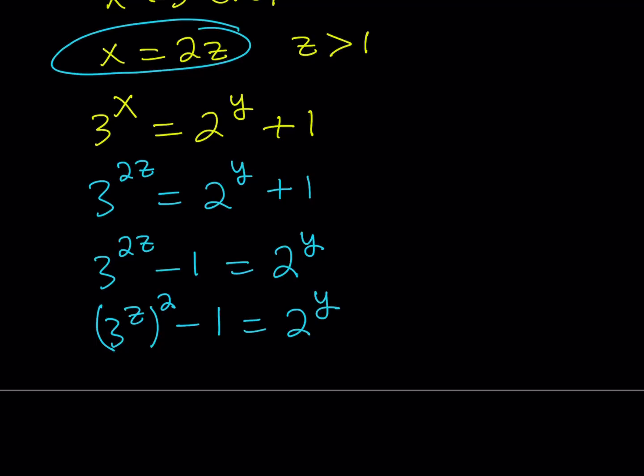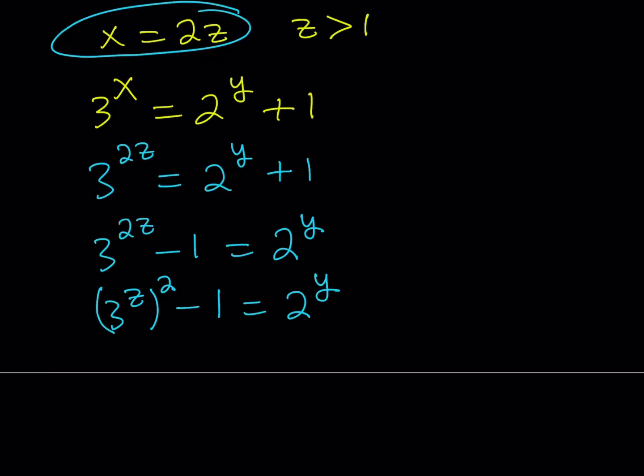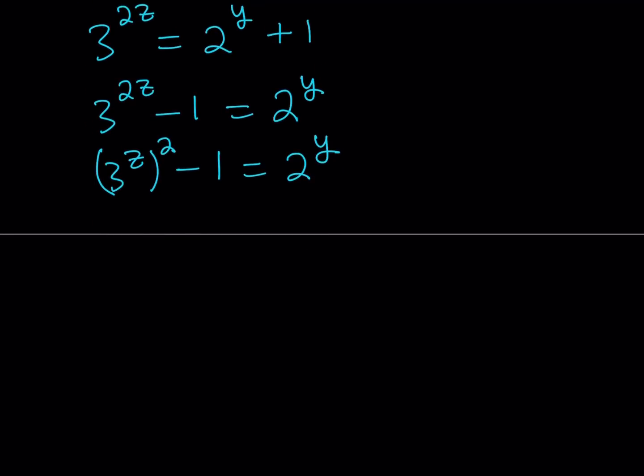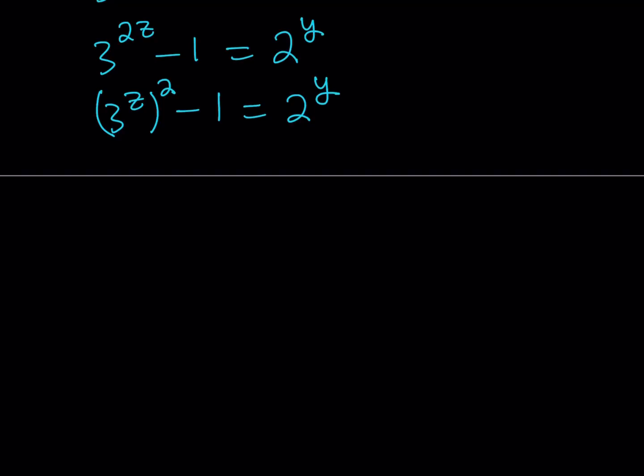The good thing about getting a perfect square is that's super important, because now you can factor it. And factoring definitely plays an important role in solving Diophantine equations. So I can basically write this as 3 to the power z plus 1, multiply by 3 to the power z minus 1, and that equals a power of 2. Now let's think about it for a minute. You have two terms on the left-hand side. One of them is 1 less than a power of 3, and the other one is 1 more than a power of 3. So these numbers are kind of two apart, and their product is a power of 2.